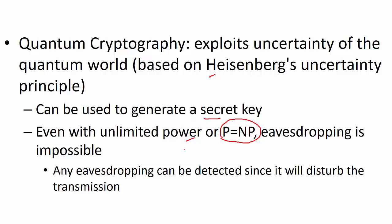Quantum cryptography can be used to generate a secret key. Even if an attacker had unlimited power, or if it were shown that P equals NP, eavesdropping is still impossible with quantum cryptography because the moment you eavesdrop it disrupts the transmission and both endpoints can detect it. If two parties A and B can generate the same secret key using this method, they can then use symmetric key algorithms to communicate — solving the hard problem of secret key generation.